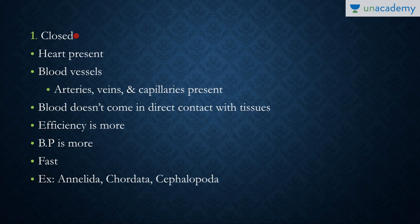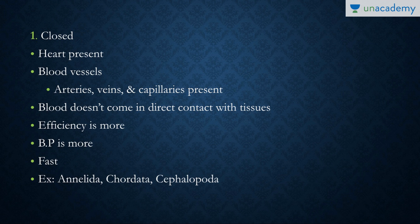Firstly, we'll talk about the closed circulatory system, which is the more developed one. The heart is present, and importantly, capillaries are also present in addition to the larger blood vessels like arteries and veins. The blood is not in direct contact with the tissues; it flows through the capillaries and cells diffuse materials through them. Efficiency is higher and blood pressure is more regulated compared to the open system.